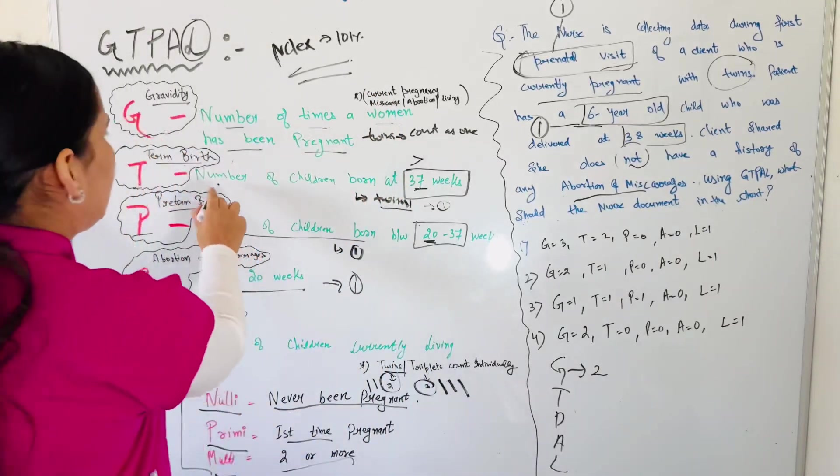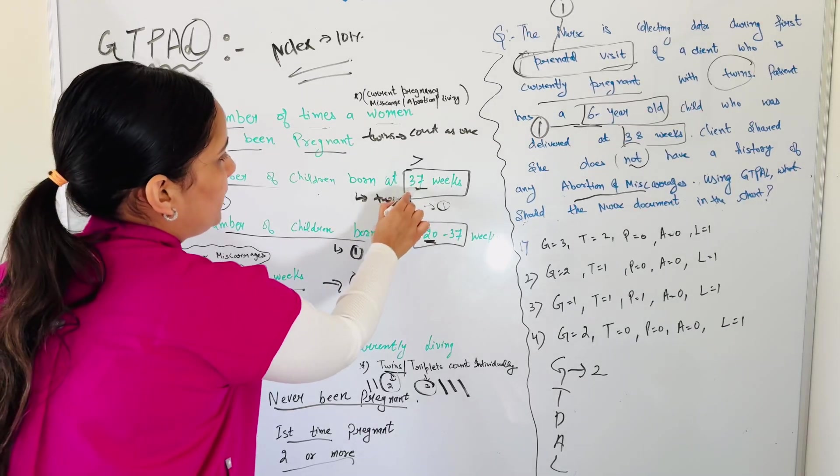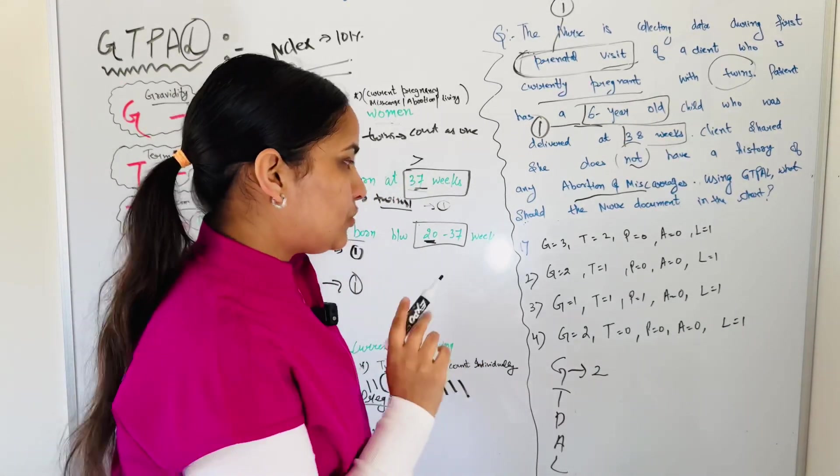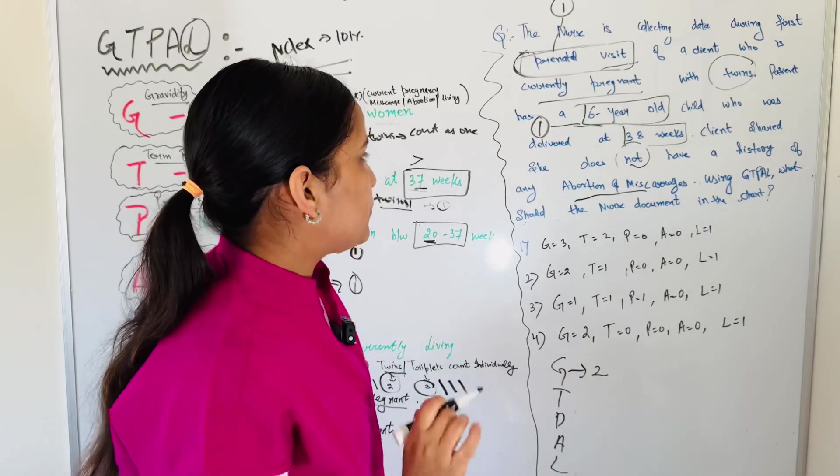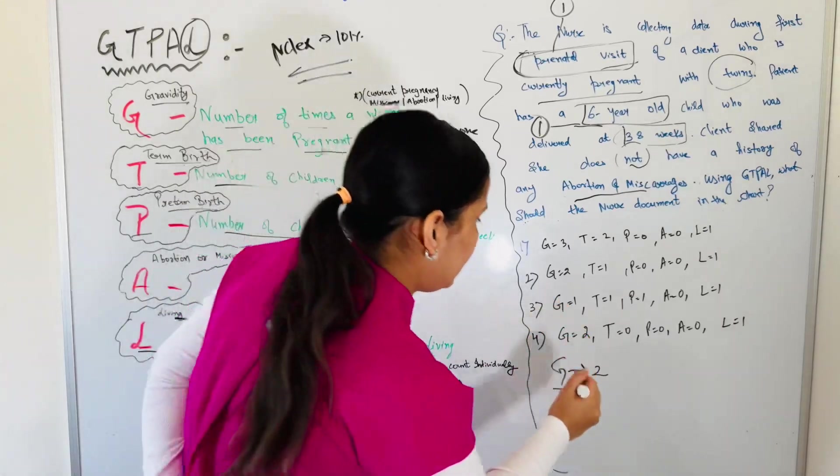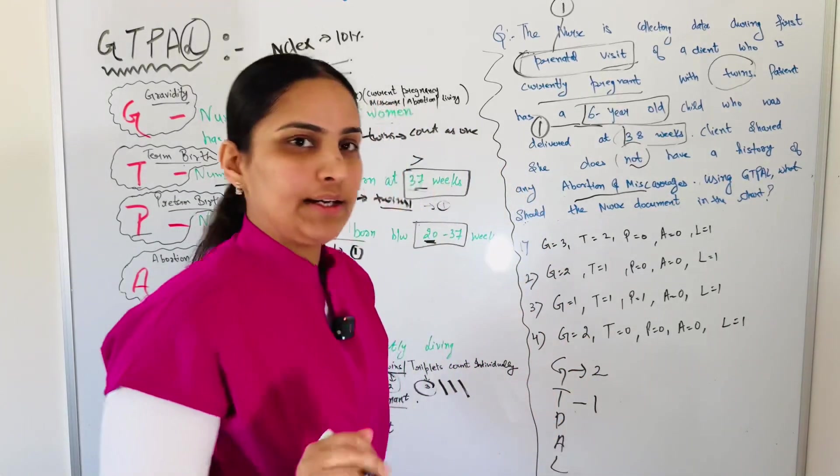Now T, what is T? Term birth. Term birth means any baby born at 37 weeks or above 37 weeks. So her baby currently alive, let's see, she born at 38 weeks. So it means term will be 1, 38 weeks.